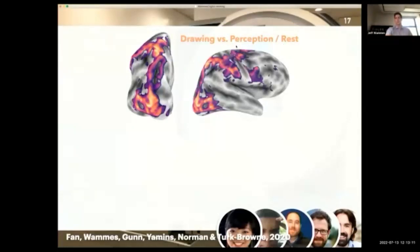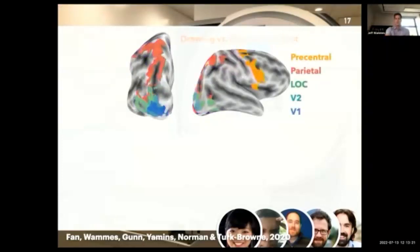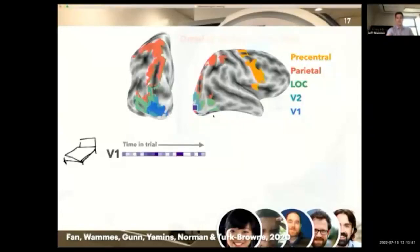So we scanned people while they were drawing. And what we did first was carve the brain up a little bit. So we selected only the swaths of cortex that were preferentially active when people were drawing relative to perception and rest. And we carved those up into ROIs that are probably implicated in the drawing process—so early visual cortical regions like V1, V2, LO, and then dorsal stream regions like parietal cortex and precentral gyrus motor cortex.